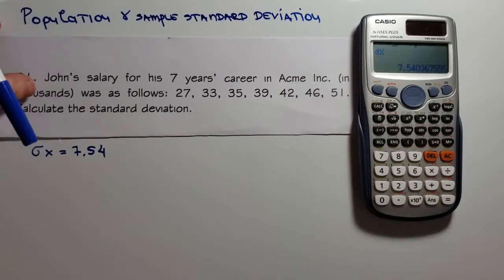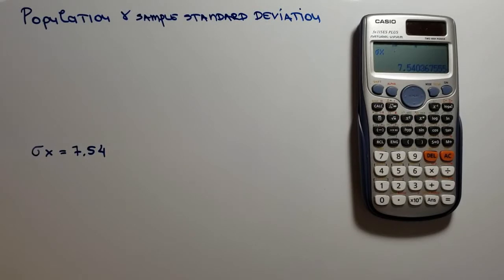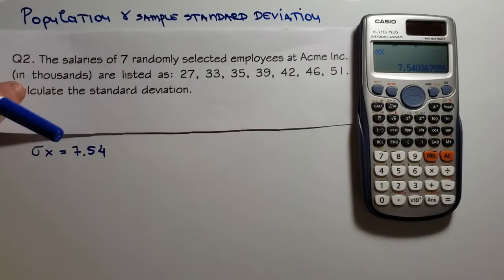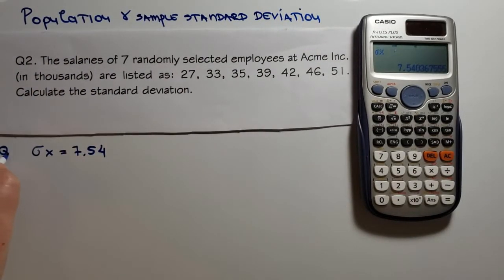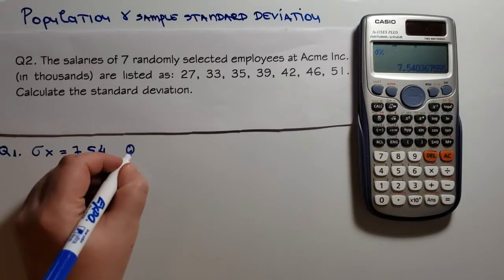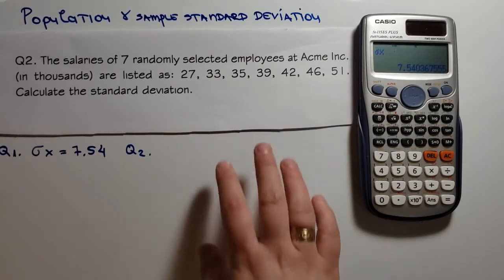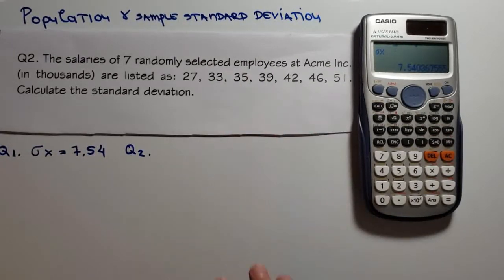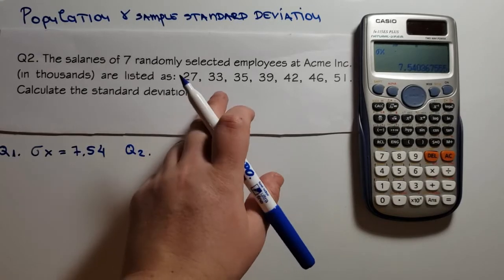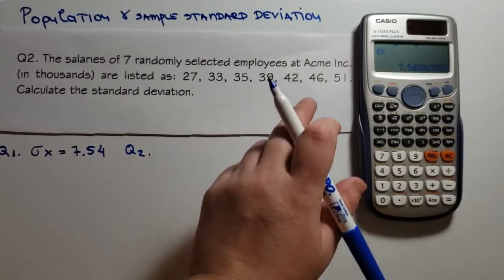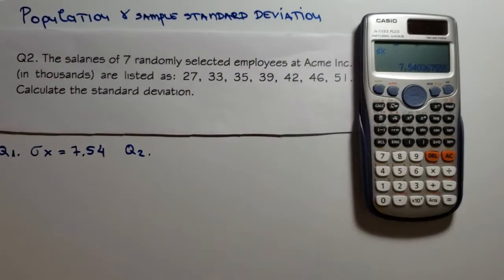Now let's go and do our second example. The salaries of seven randomly selected employees at ACME Inc. in thousands are listed as 27, 33, 35, 39, 42, 46, and 51,000. Calculate the standard deviation.